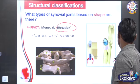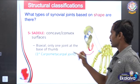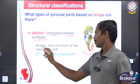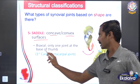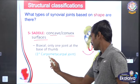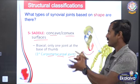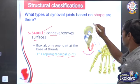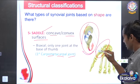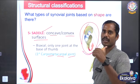The fifth one is the saddle joint. Saddle joints have convex surfaces and are biaxial. The only saddle joint in the body is at the base of the thumb — the first carpo-metacarpal joint. Movements allowed include flexion, extension, and rotation.